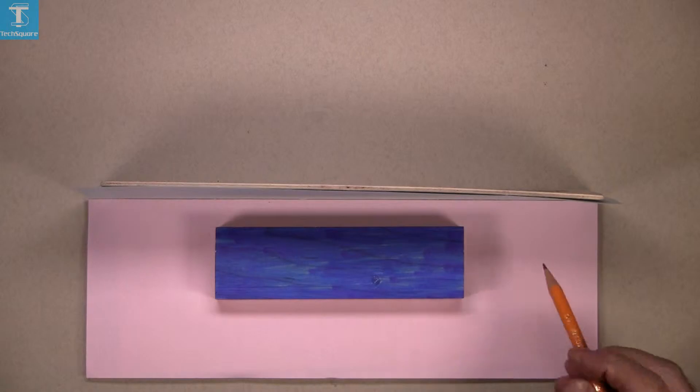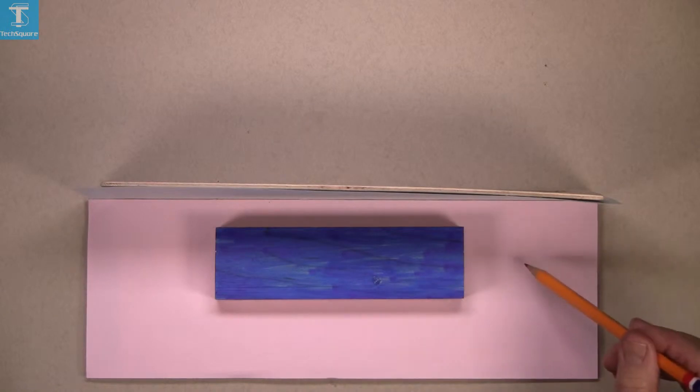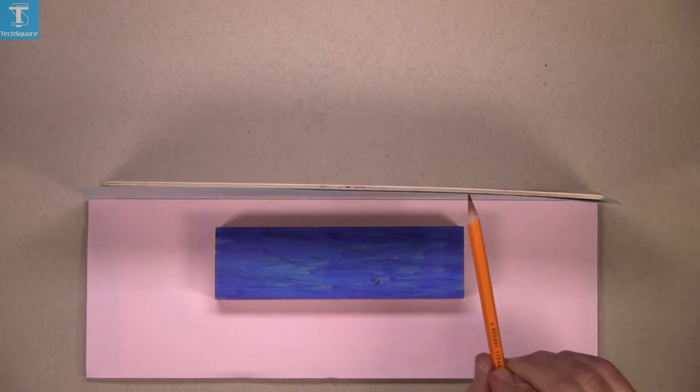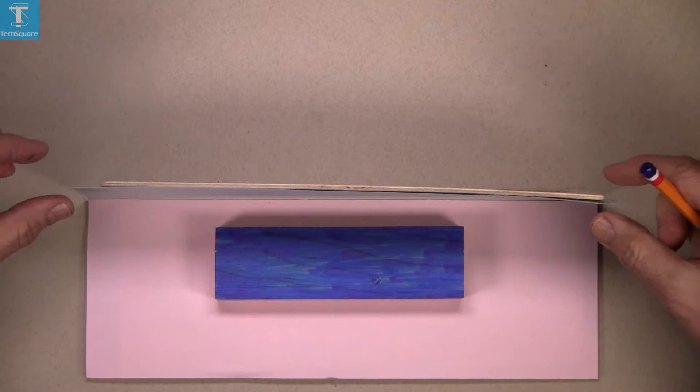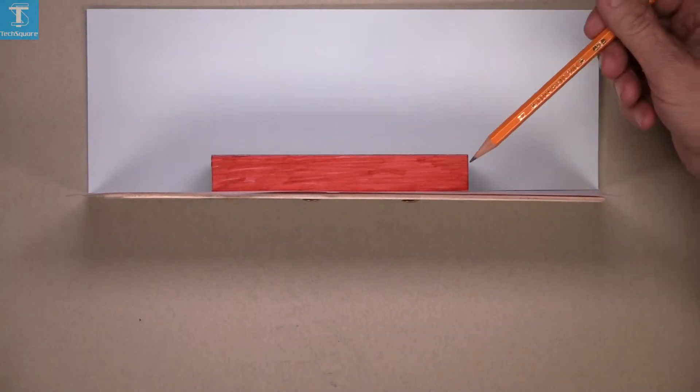When we look directly at the pink, we cannot see the blue. The blue surface is not visible when you're looking at the pink, but when you're looking at the blue section, we cannot see the pink.